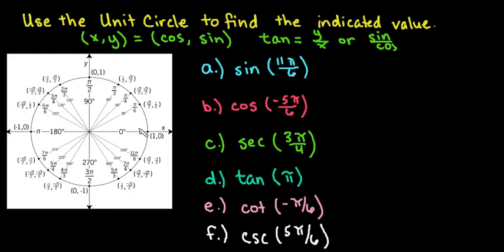All right, so the first one that we have is sine 11 pi over 6. So the first thing that we would do is remember that we always go counterclockwise, unless it's negative, then we go clockwise. So since we have positive 11 pi over 6, we're talking about this point right here. And remember that it's cosine comma sine, so all we have to do is look at the sine, which is the y coordinate of this one. So it just is negative 1 half, because it's just the y coordinate of that point, and that's it. So let's move on to the next one.